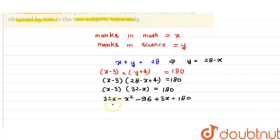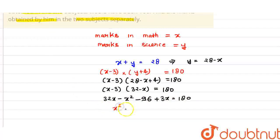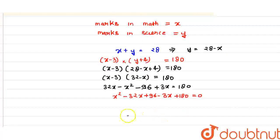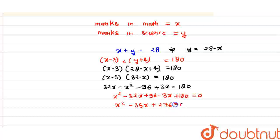Now when we multiply: x into 32 gives 32x, minus x into x gives minus x squared, minus 32 into 3 gives minus 96, and minus 3 into minus x gives plus 3x, equals 180. Rearranging all terms to the right side, the signs change. Finally we get x squared minus 32x plus 96 minus 3x plus 180 equals 0, which simplifies to x squared minus 35x plus 276 equals 0.